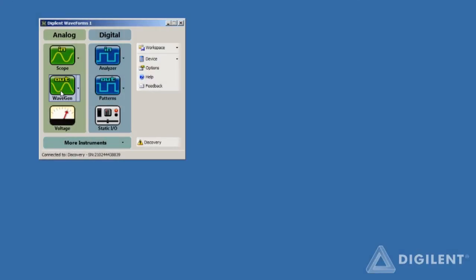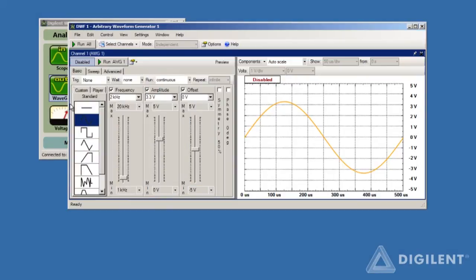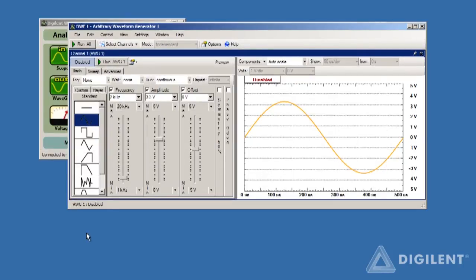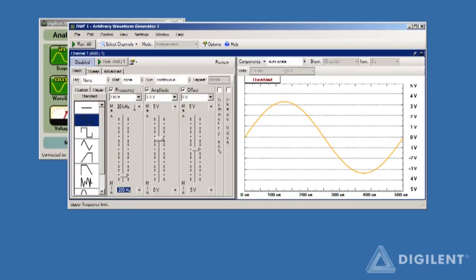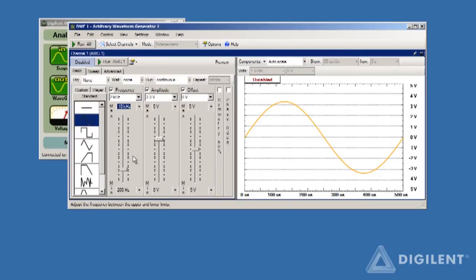First, open the analog discovery waveform generator. Click on this sine wave icon to create a sinusoidal signal. Since we're going to be listening to our signals, we want to set up a frequency range which corresponds to a reasonable range of audible frequencies. I'll set the minimum frequency to say 200 Hz and the maximum frequency to 10 kHz.